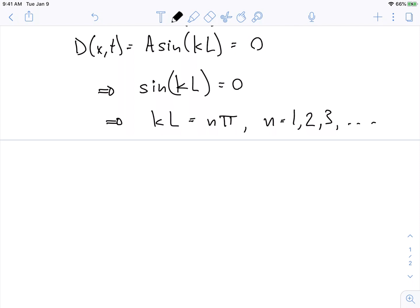So remember, sine is multi-valued. So when sine is equal to zero, it means that kL must be equal to n times pi. Well, what is k equal to? Well, k is the wave number. It needs to be the wavelength times L times n pi.